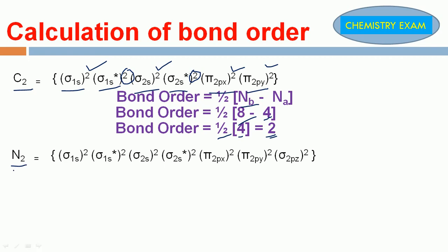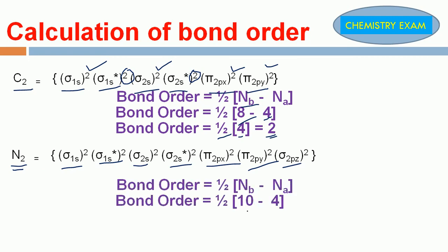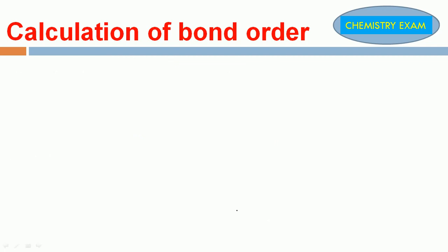Next, N₂ molecule. The electronic configuration is sigma 1s², sigma star 1s², sigma 2s², sigma star 2s², pi 2px², pi 2py², sigma 2pz². These are the electronic configurations for the N₂ molecule. Bond order: 10 bonding electrons, 4 anti-bonding electrons, so 10 minus 4 equals 6, and 1/2 into 6 equals 3. The bond order for N₂ molecule is 3.